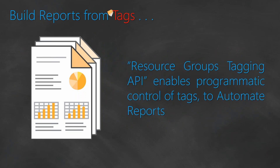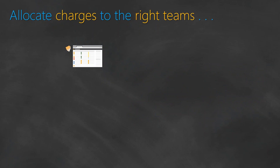AWS provides you a resource grouping API. Through this API, you can automate the generation of reports. All you have to do is go ahead and use your favorite programming language like Python, Node.js, or Java, call this API, group the resources, and build up the reports. If you are not familiar with that, you can still go ahead and use the AWS console, go to the resources, build a dashboard, and create a report out of that.